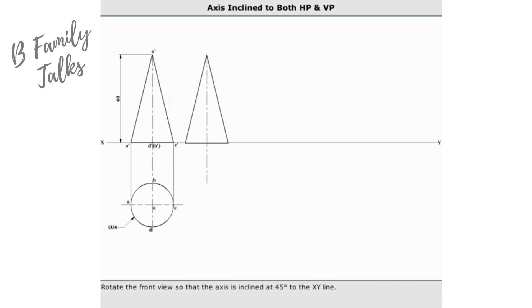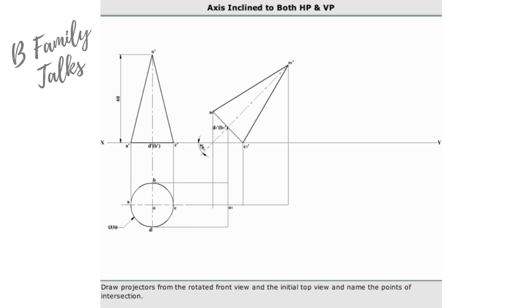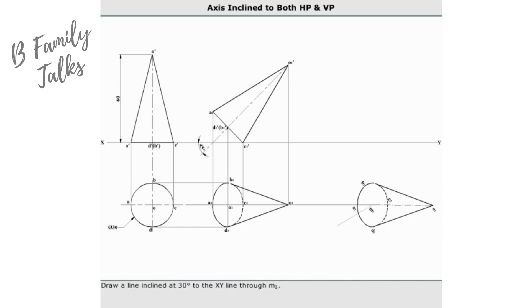Rotate the front view so that the axis is inclined at 45 degrees to the XY line. Draw projectors from the rotated front view and the initial top view, and name the points of intersection. Join the intersection points correspondingly to get the top view.